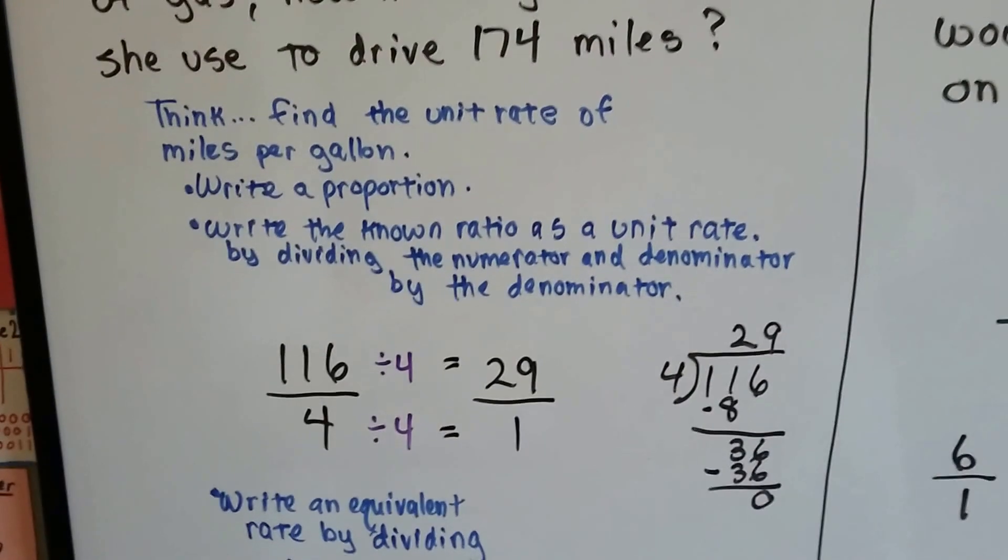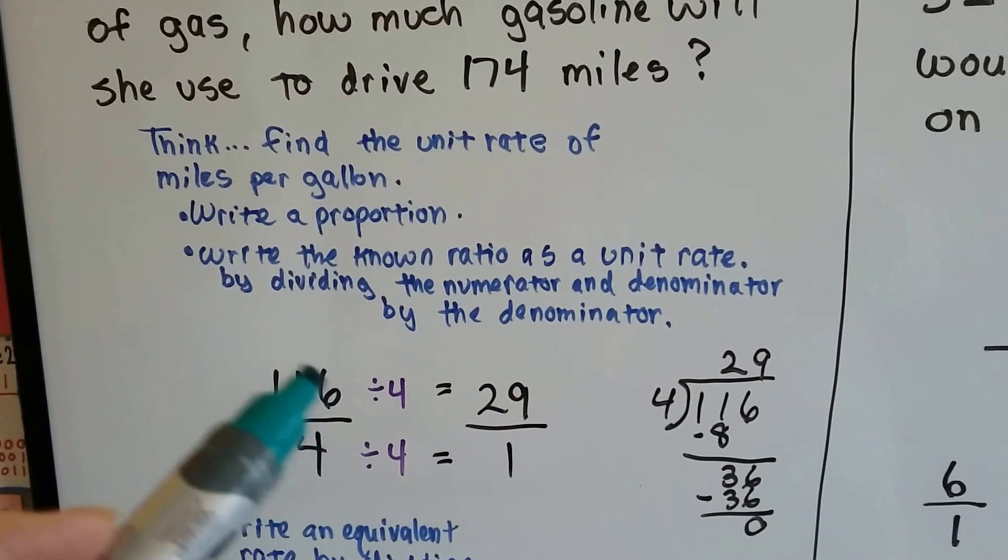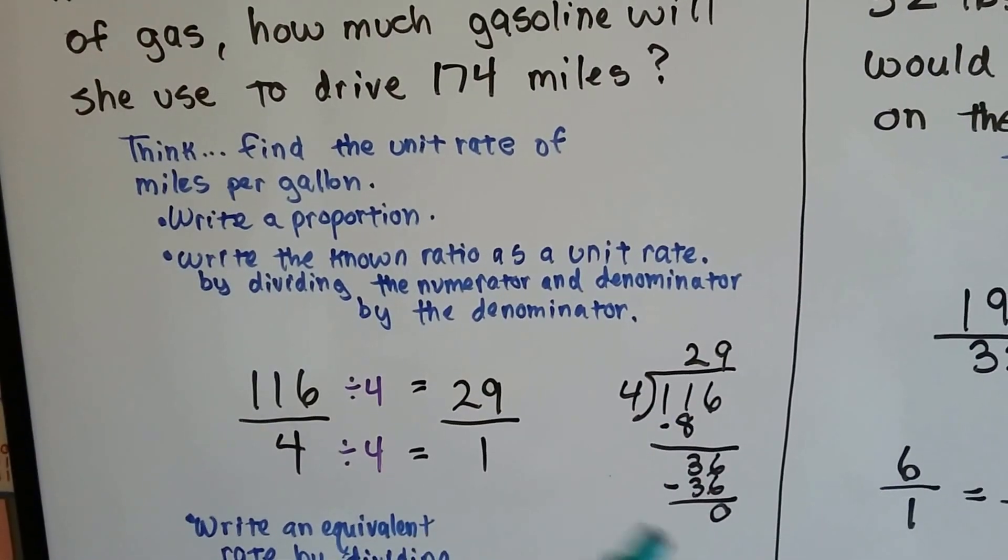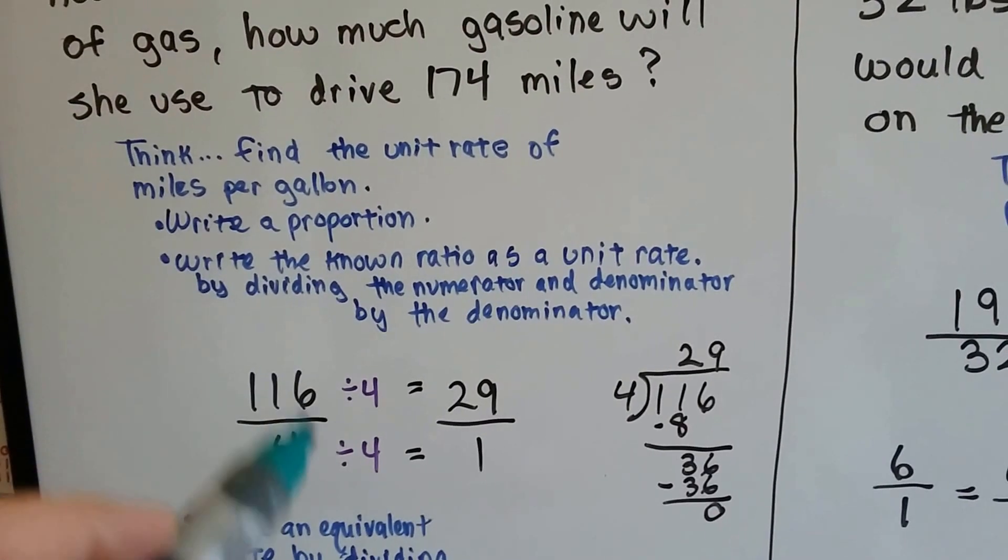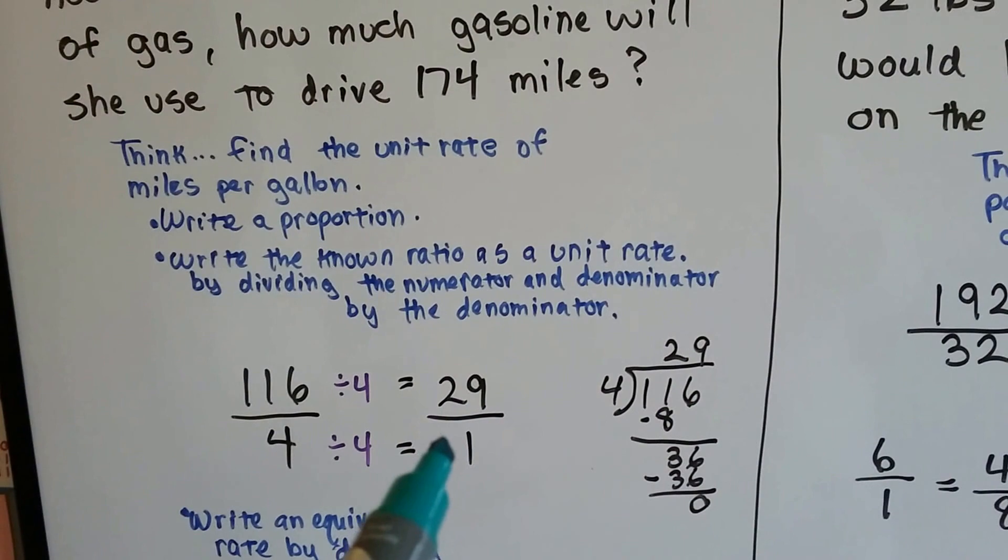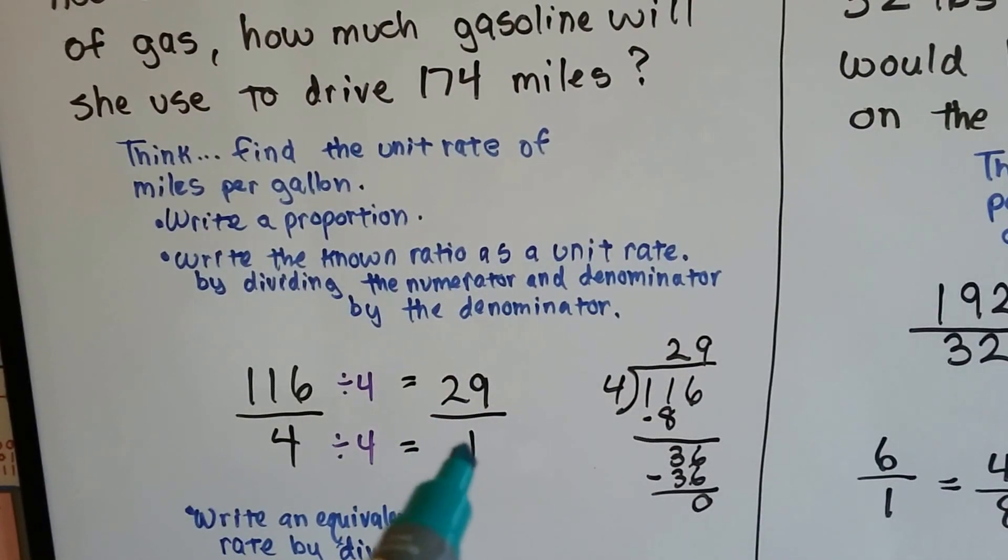116 over 4, and we divide the 116 and the 4 by the denominator, the 4. We do the division because basically this is a division problem. 4 goes into 116 29 times evenly, so we know that she gets 29 miles for each gallon.